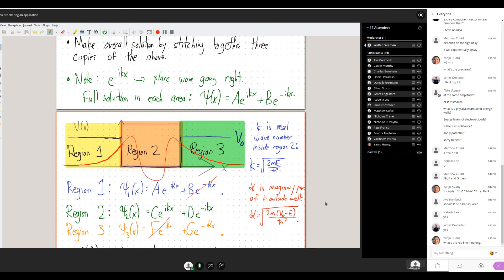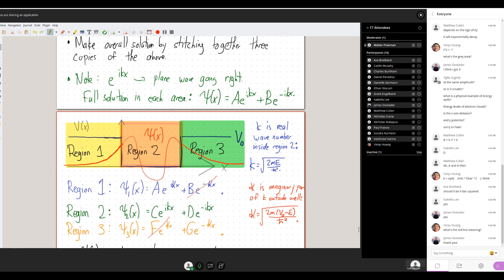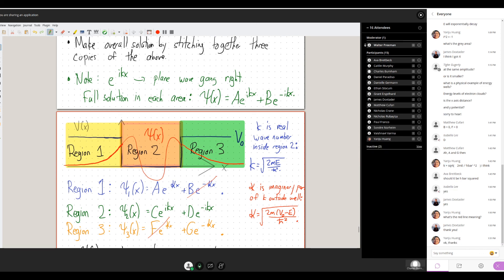I'm going to copy this figure just because I'll need it on the next page. So, I'm just going to write down those expressions in each region. So, in region one, I know psi one is actually, I'm going to introduce a new notation here. k is the real wave number inside region two. kappa is the imaginary number in regions one and three.